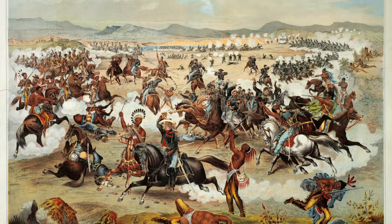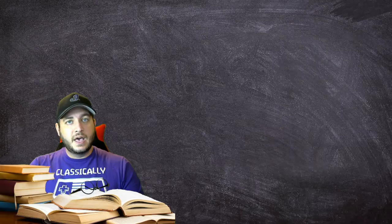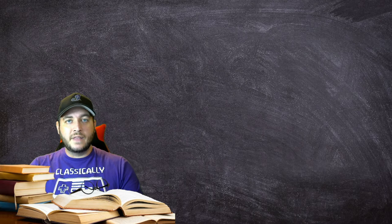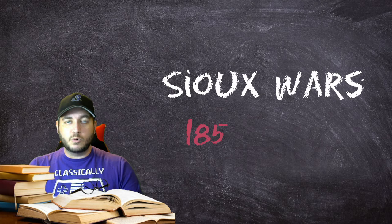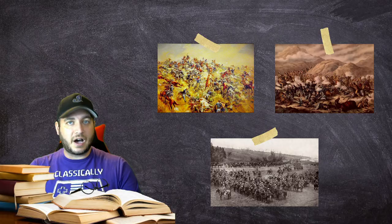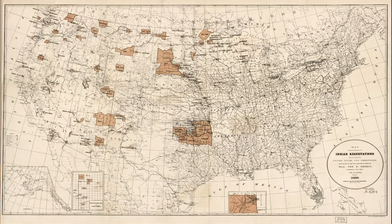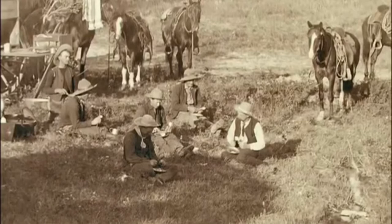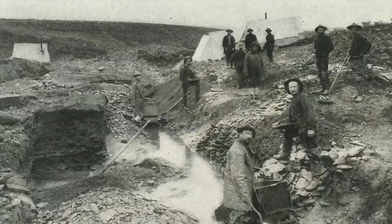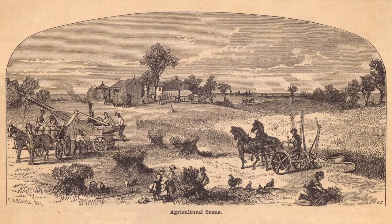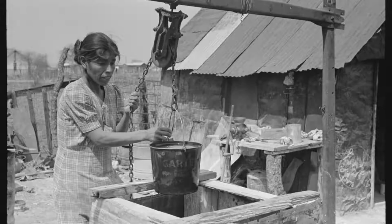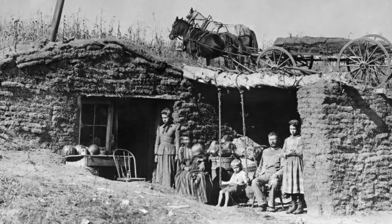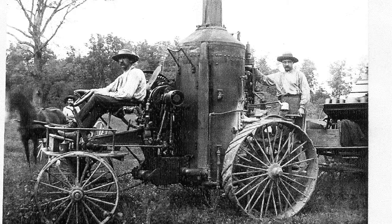As settlers continued moving into the Great Plains, they battled the Plains Indian tribes in a series of conflicts known as the Sioux Wars, lasting from 1854 to 1890. Although both sides won battles, the tribes were eventually forced onto small, often undesirable pockets of land, and many promises made to native leaders were broken. Farmers developed new technologies to farm the dry but fertile Great Plains — digging wells, building windmills to pump groundwater, constructing sod houses, surrounding fields with barbed wire, and using steel plows and farm machinery.